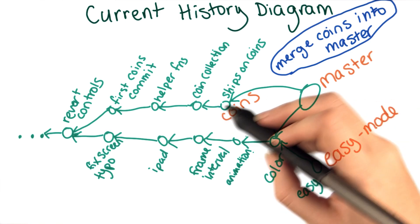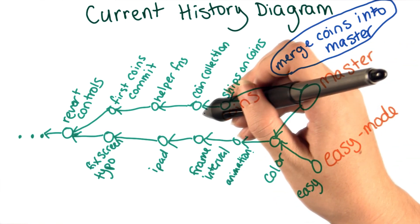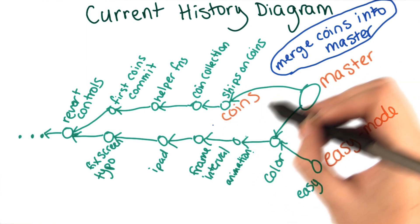Once we've successfully merged the two branches, we won't need an easy reference to this commit anymore. We'll be able to reach it through the master. So once we're done with the merge, we can delete the coin branch.